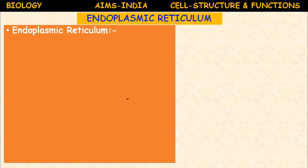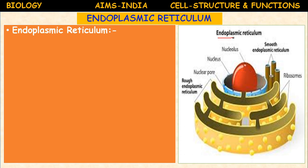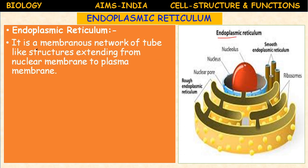Endoplasmic reticulum is another very important structure, observable only under an electron microscope — it is an electron microscopic, membrane-bounded organelle. It is a membranous network of tube-like structures extending from the nuclear membrane. This is the nucleus; from the nuclear membrane, the endoplasmic reticulum extends.